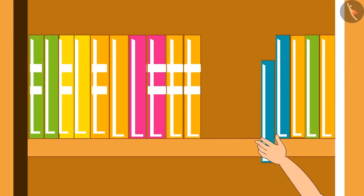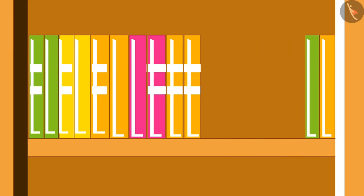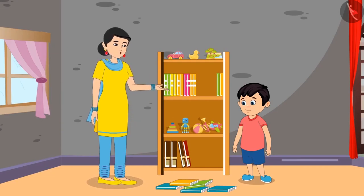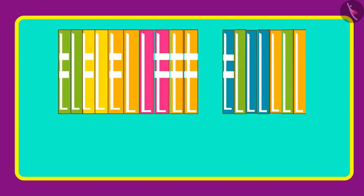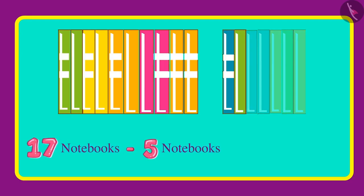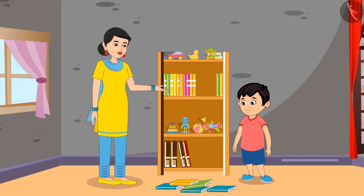1, 2, 3, 4, 5 — 5 notebooks are used. Now subtract the 5 used notebooks out of 17 notebooks. Tell me how many new notebooks you have. So out of the 17 notebooks, if we subtract 5 notebooks, we are left with 12 notebooks.